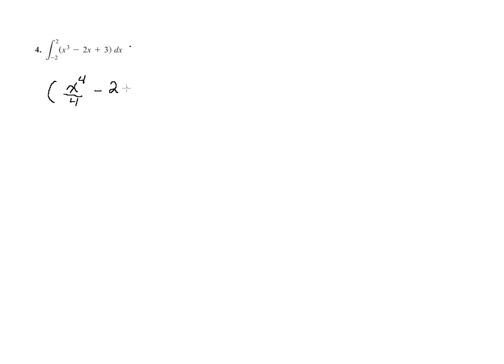I'll do the same thing with the next term. I have negative 2 times x raised to the second power over the new power, which is 2, plus 3x. Then I'll evaluate that from negative 2 to 2.